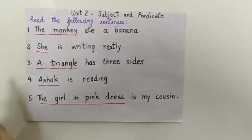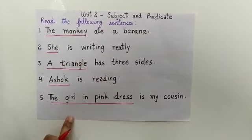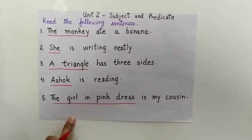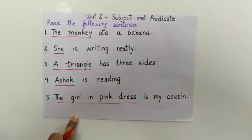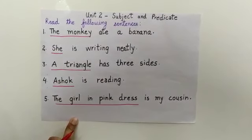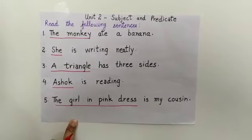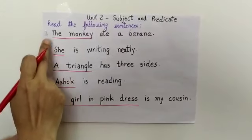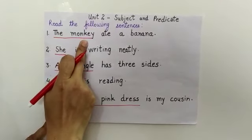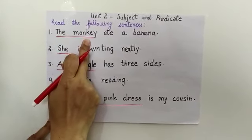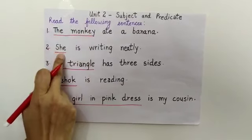So, students, in these sentences, we are talking about someone or something. The person or thing we speak about is called the subject. In sentence 1, we are talking about the monkey. So, the monkey is the subject of the sentence.